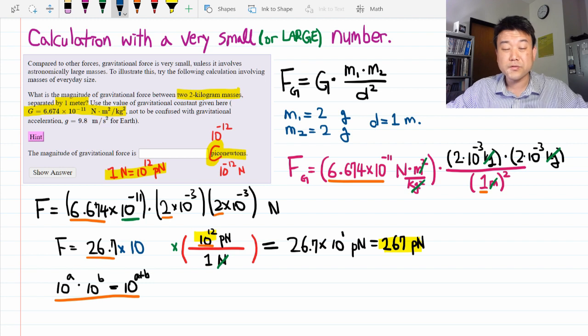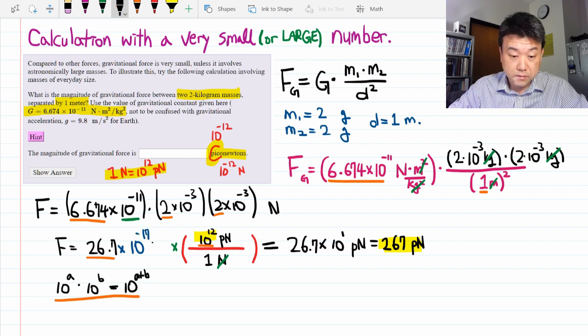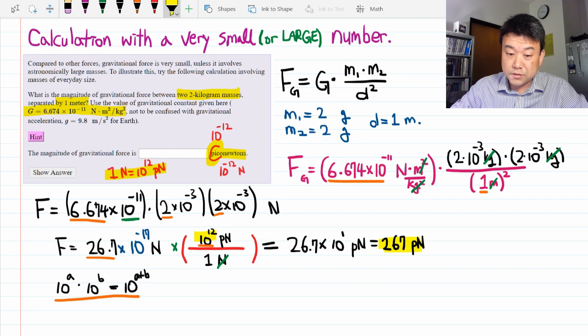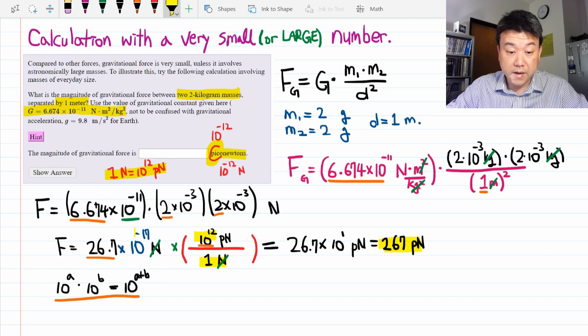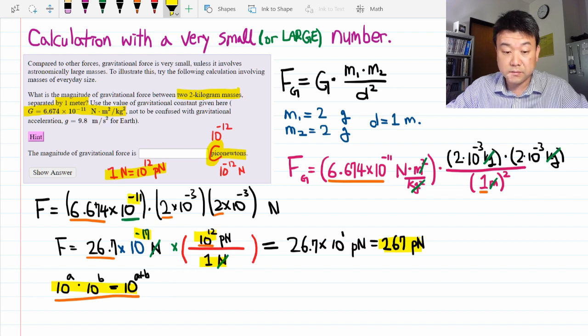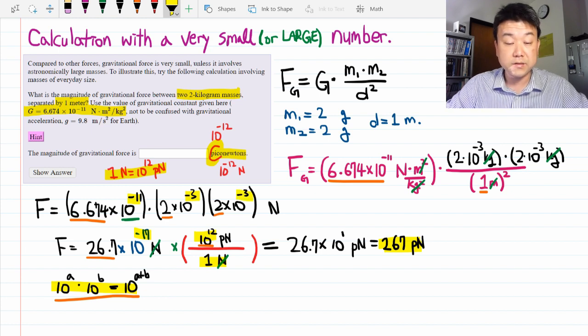So 10 to minus 17 newtons, which is going to cancel out with this newton here when we convert the units. Please make sure you know where this minus 17 came from. This is the exponential algebra rule. I have 10 to minus 11 plus minus 3, so minus 14 plus minus 3 is 10 to minus 17.